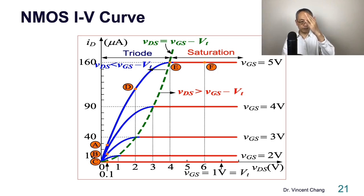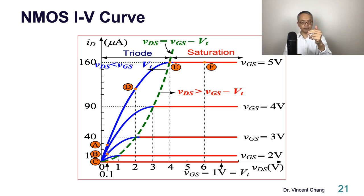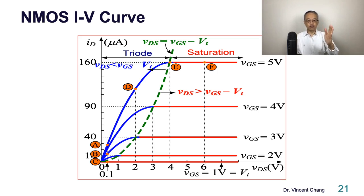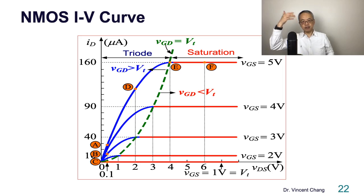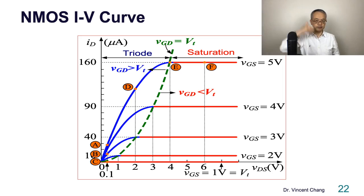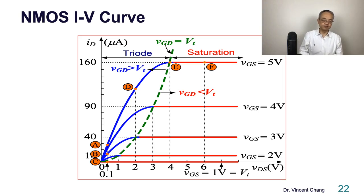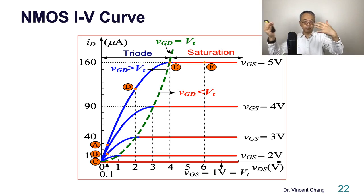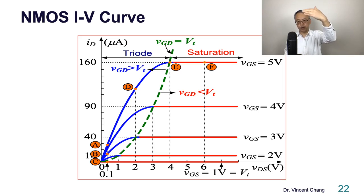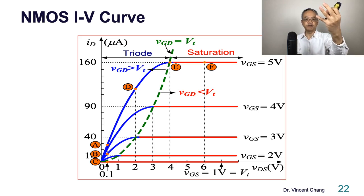The sixth point — the first three points A, B, C — have VDS equals 0.1, 1, 3 volts. For D, E, F, with VGS fixed at 5 volts, VDS equals 2, 4, and 6. Another representation for the three conditions is to compare VGD and VT. For triode: VGD is greater than VT; for the boundary: VGD equals VT; for saturation: VGD is less than VT. You may need to pause and review this representation.